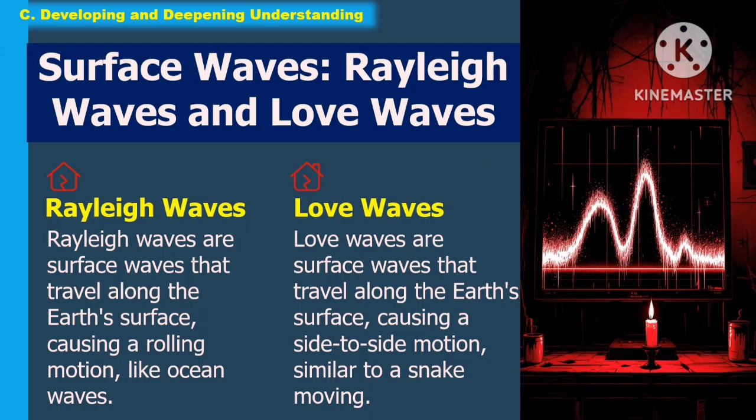The surface waves include Rayleigh waves and Love waves. Rayleigh waves are surface waves that travel along the Earth's surface, causing a rolling motion like ocean waves. Love waves are surface waves that travel along the Earth's surface, causing a side-to-side motion similar to a snake moving.